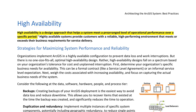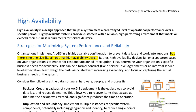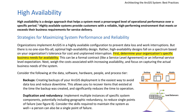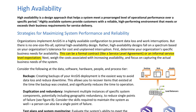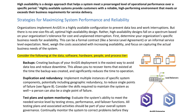High Availability. High availability is a design approach that helps a system meet a pre-arranged level of operational performance over a specific period. Highly available systems provide customers with a reliable, high-performing environment that meets or exceeds their business requirements for service delivery. Organizations implement ArcGIS in a highly available configuration to prevent data loss and work interruptions. High-availability designs fall on a spectrum based on your organization's tolerance for cost and unplanned interruption. First, determine your organization's specific business needs for availability — either a formal service-level agreement or an informal service-level expectation. Key considerations include: Backups — creating backups of your ArcGIS deployment is the easiest way to avoid data loss and reduce downtime. Duplication and redundancy — implement multiple instances of specific system components, potentially including geographic redundancy, to reduce single points of failure.